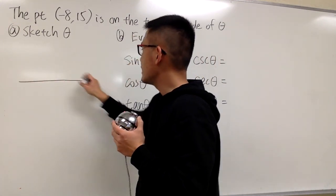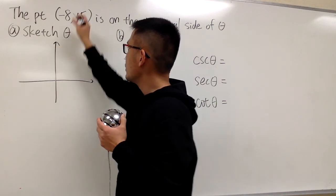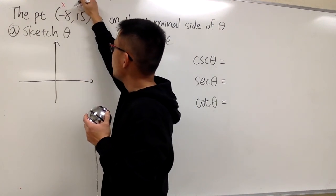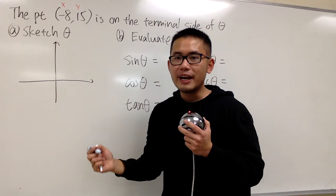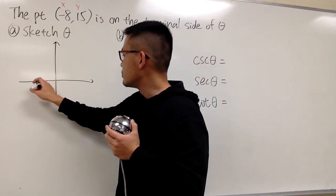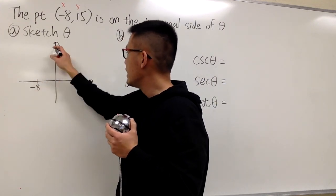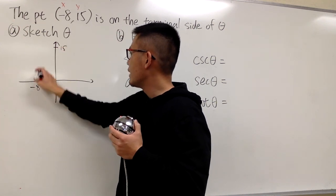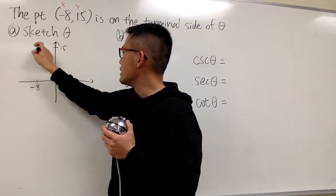Right here, I'll just draw the x and the y-axis, and we know the x value is negative 8, and the y value is positive 15. So, let me just say this right here is my negative 8, and let me put this down for 15. And we have this point right here.